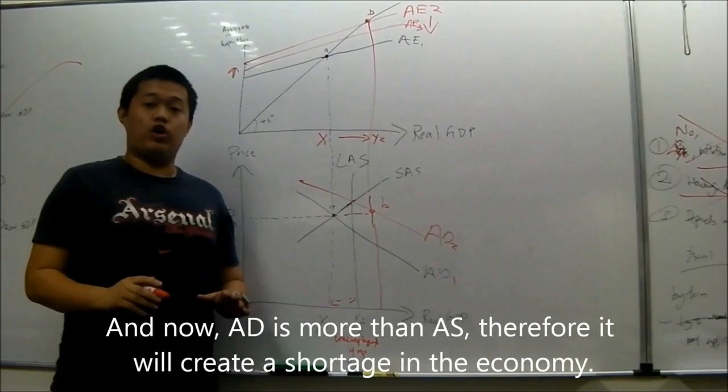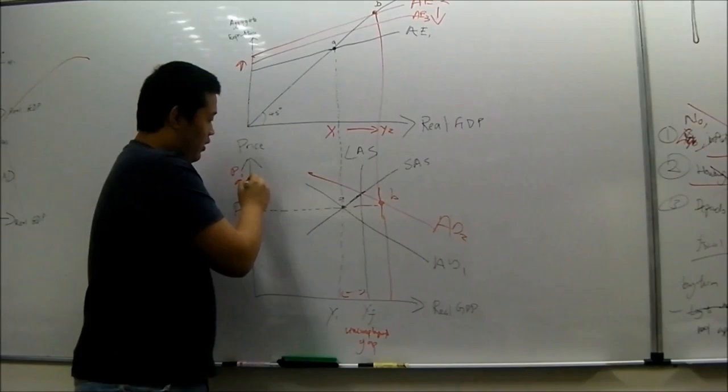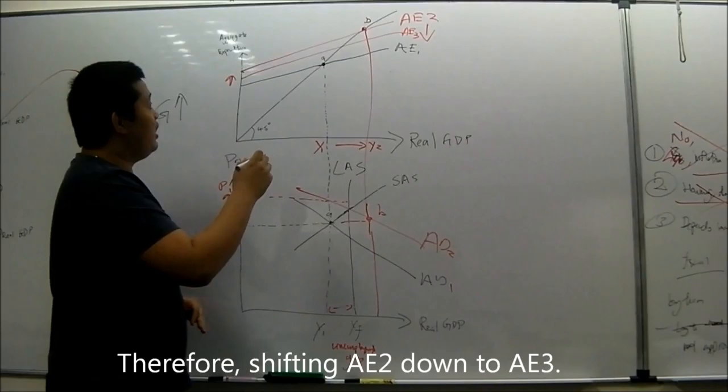As G increases, it will shift AD1 to AD2. And now AD is more than AS, therefore it will create a shortage in the economy. When there is a shortage in the economy, the price will be pushed up from P1 to P2.